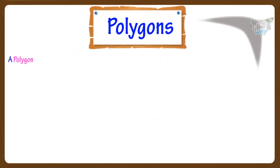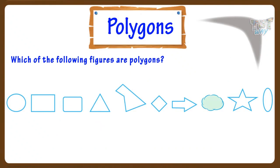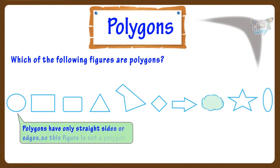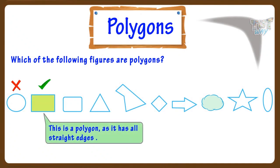Polygon. A polygon is a 2D figure with three or more straight sides. So let's mark which of the following figures are polygons. We just learned polygons have only straight sides or edges, so this figure is not a polygon. This is a polygon as it has all straight sides.